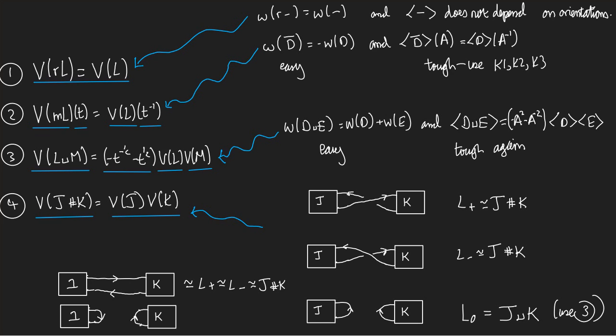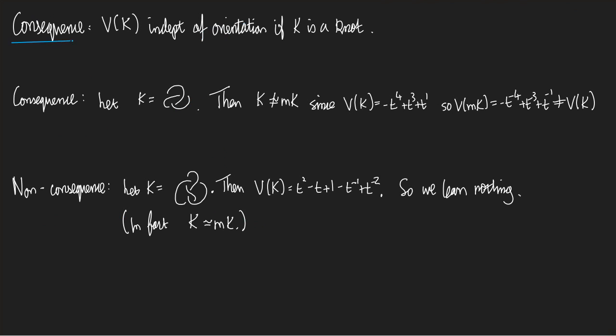Let's look at some consequences. Consequence number one: the Jones polynomial of a knot is independent of orientation. We know the Jones polynomial doesn't change if you take a reverse. A knot has only one reverse, and it has two orientations - one is the reverse of the other. So if you orient a knot one way and take the Jones polynomial, or orient it the other way, you always get the same thing. This does not work for links, since a two-component link has four orientations and reverses only identify pairs of them.